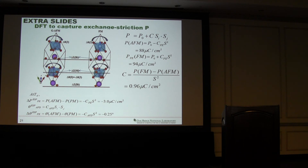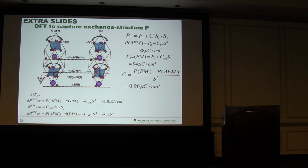Maybe you already mentioned — the stabilized R3C phase in bismuth cobalt oxide, is that confirmed by experiments? No, that is not confirmed — it has not been done yet. How much strain do you need to stabilize it? I said 3.8%. Three point eight percent? Yes, 3.8%. So you need to find 3.8% tensile strain. Thanks.